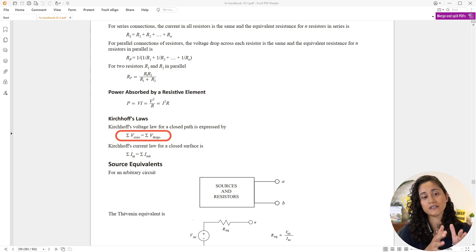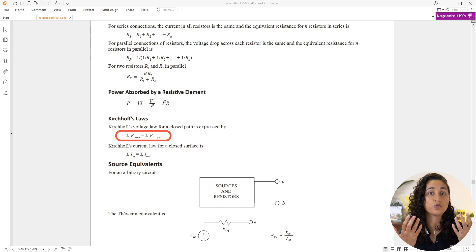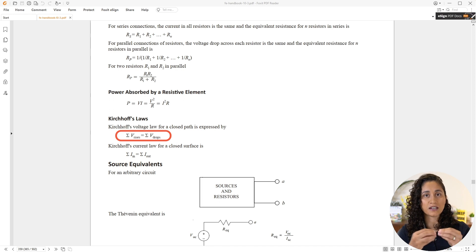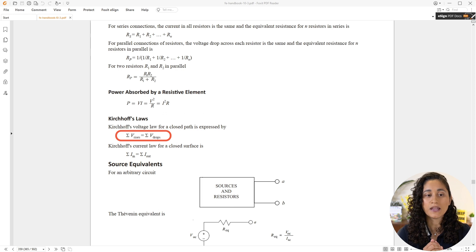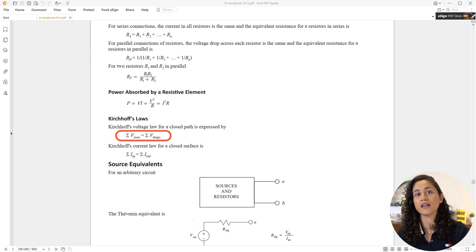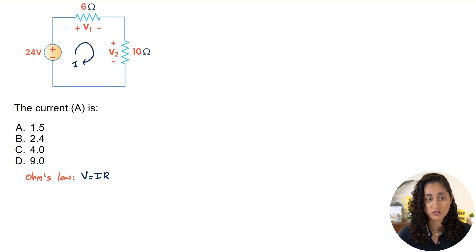This is the same as saying that the sum of all voltages around any closed loop in a circuit must equal zero. I prefer that second definition, and I'll show it to you in the lecture notes. It is easier to use, and you'll see how we apply it when we start solving the problem.